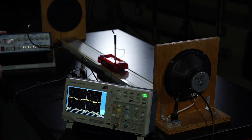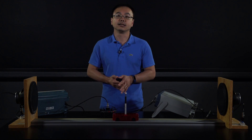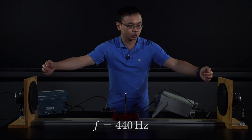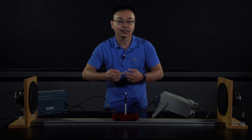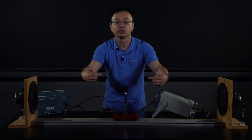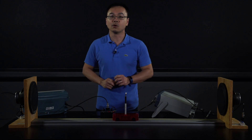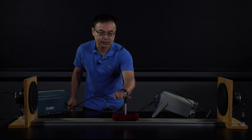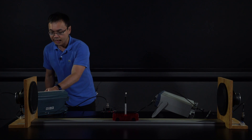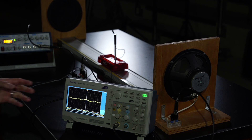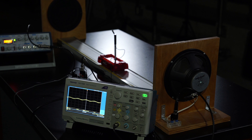The function generator is tuned to produce waves at 80 hertz. When I turn it on, I generate two traveling waves traveling toward each other. This setup is designed such that the two waves cancel exactly at the middle of the track. With the microphone placed in the middle, you can see from the scope that the magnitude of the sound wave is very small — almost zero.